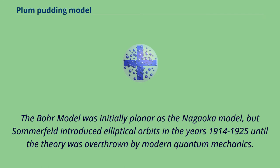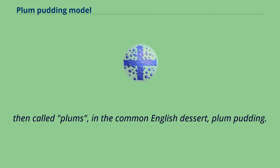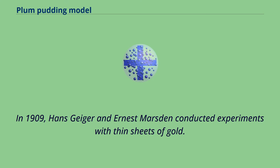The colloquial nickname 'plum-pudding' was soon attributed to Thomson's model, as the distribution of electrons within its positively charged region of space reminded many scientists of raisins — then called plums — in the common English dessert, plum-pudding.